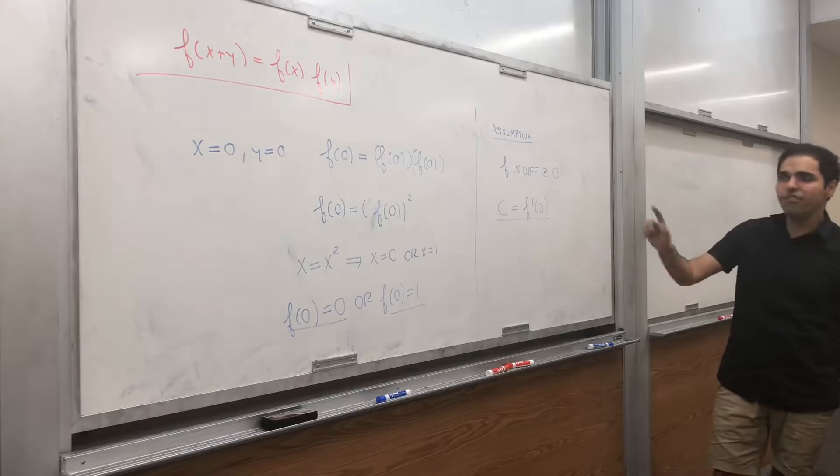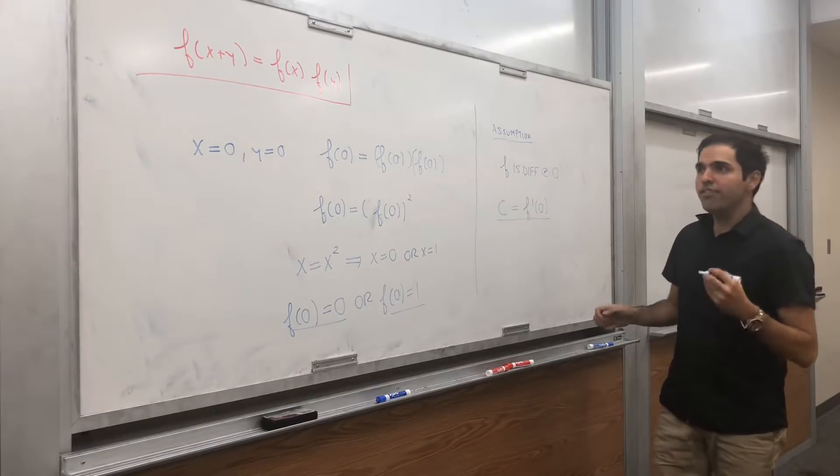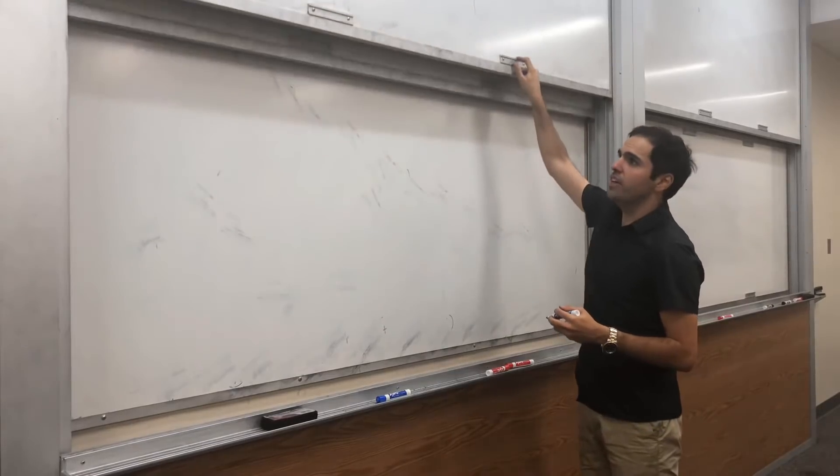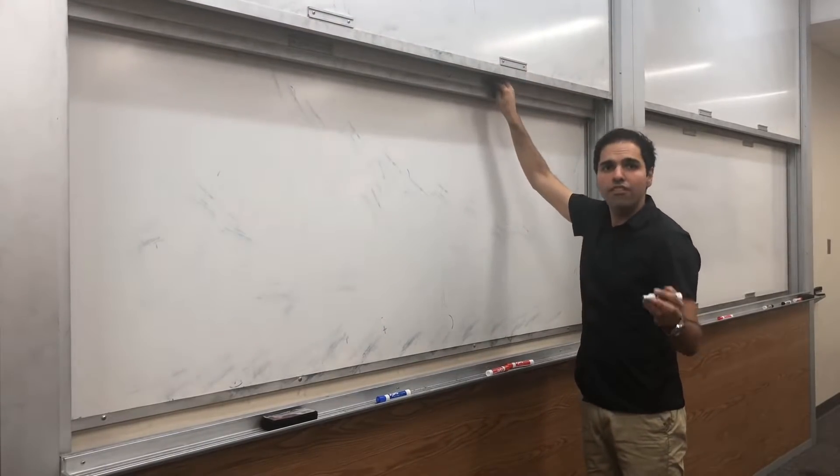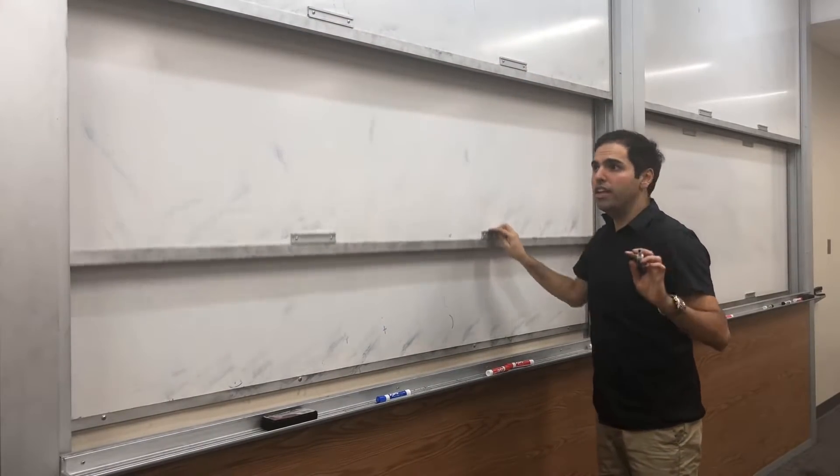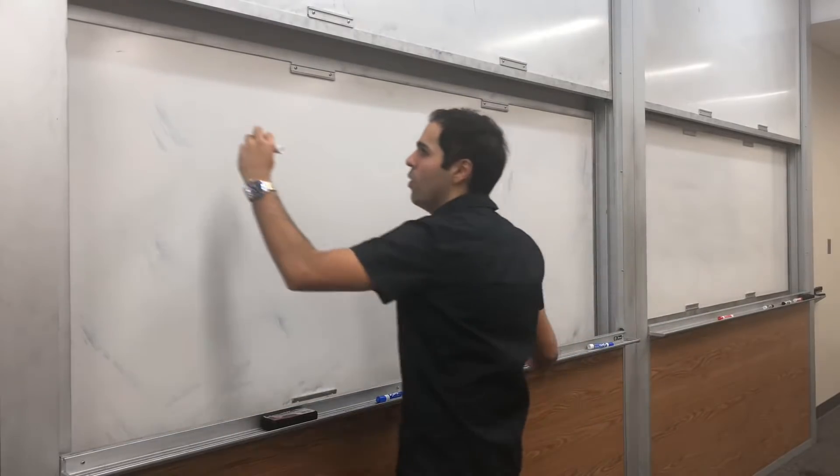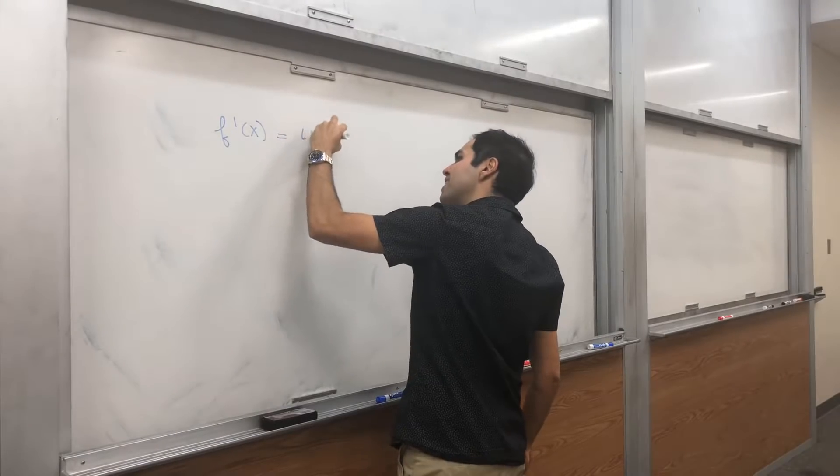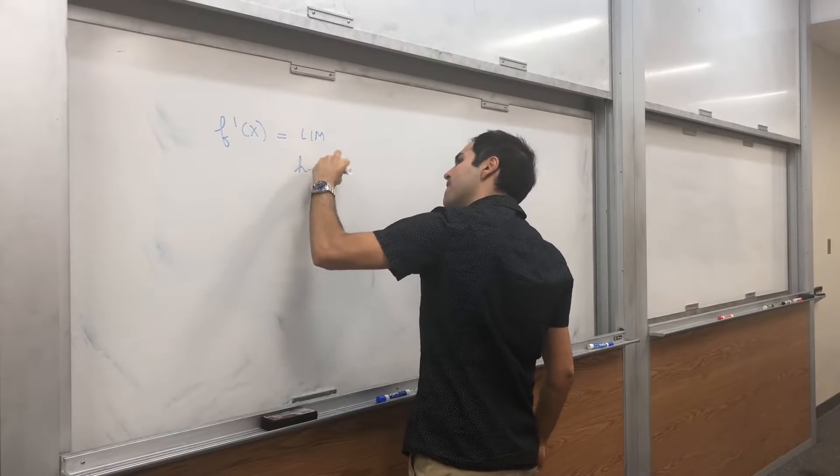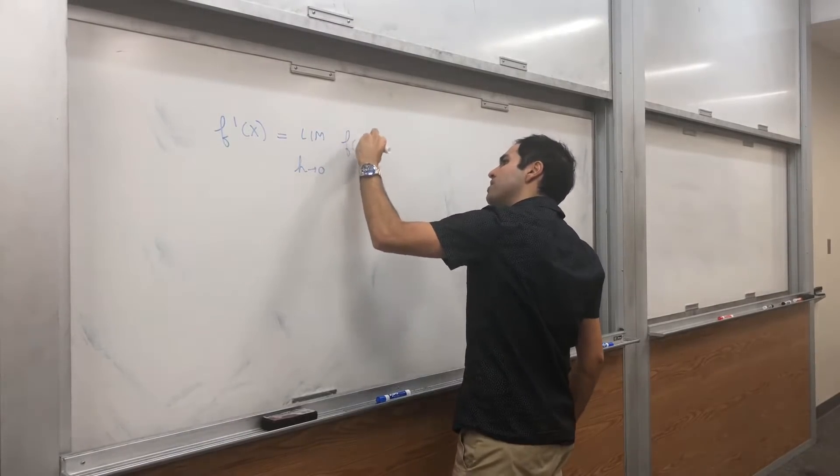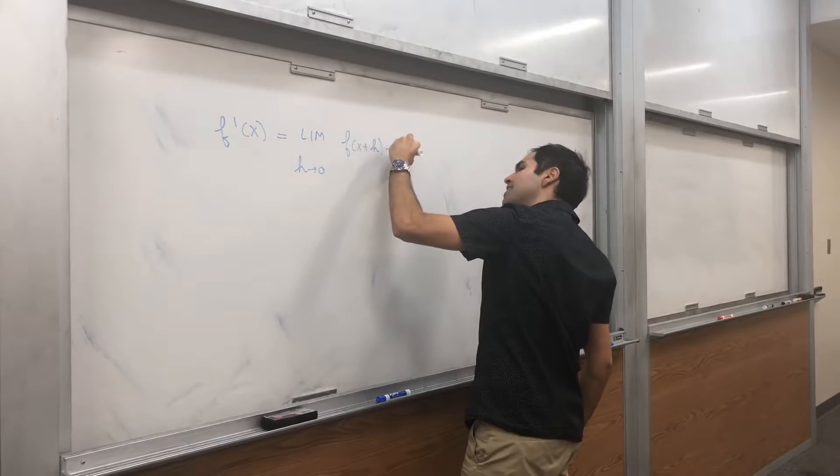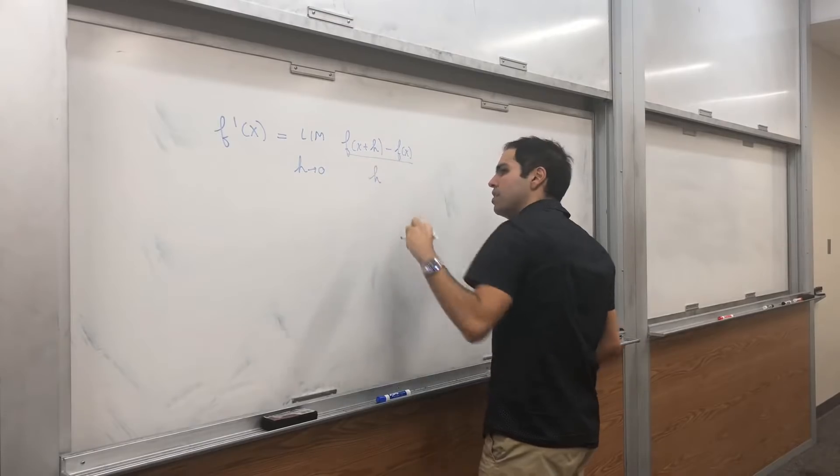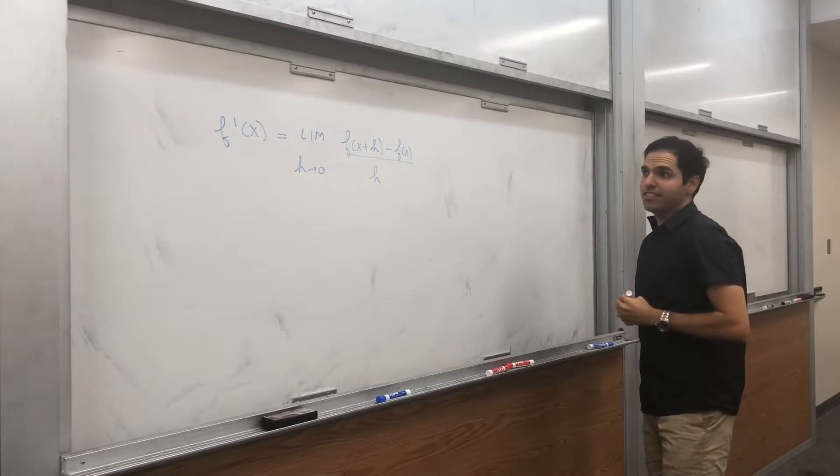And I'm claiming from this we can already figure out what f is because let's now try to calculate the derivative of f at any other point if it exists. So what is f prime of x? Well that is the limit as h goes to 0 of f of x plus h minus f of x over h. Provided this exists.